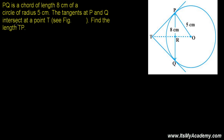Here I have another question from geometry related to circles and especially based on the concept of chord. PQ is a chord of length 8 cm of a circle of radius 5 cm. So we have a circle whose radius is 5 cm, and we have a chord PQ. This complete length of PQ is 8 cm.